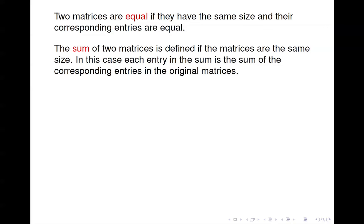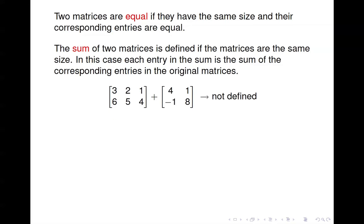We can compute the sum of two matrices — we can add two matrices together. This is defined if both matrices are the same size, so if they have the same number of rows and the same number of columns. In this case, the ijth entry in the sum is just the sum of the ijth entries in each of the original matrices.